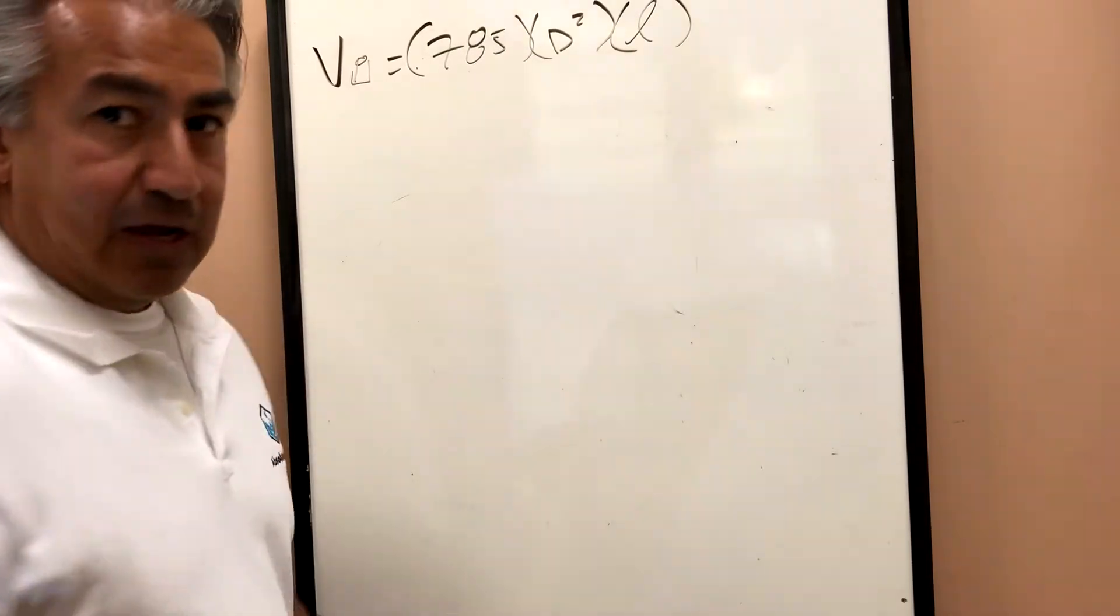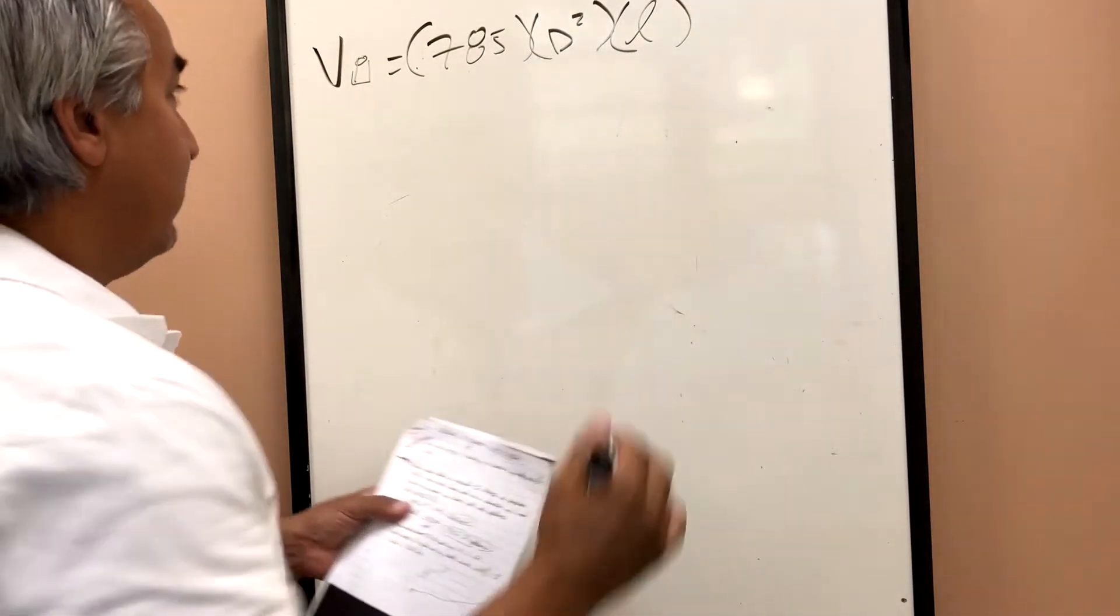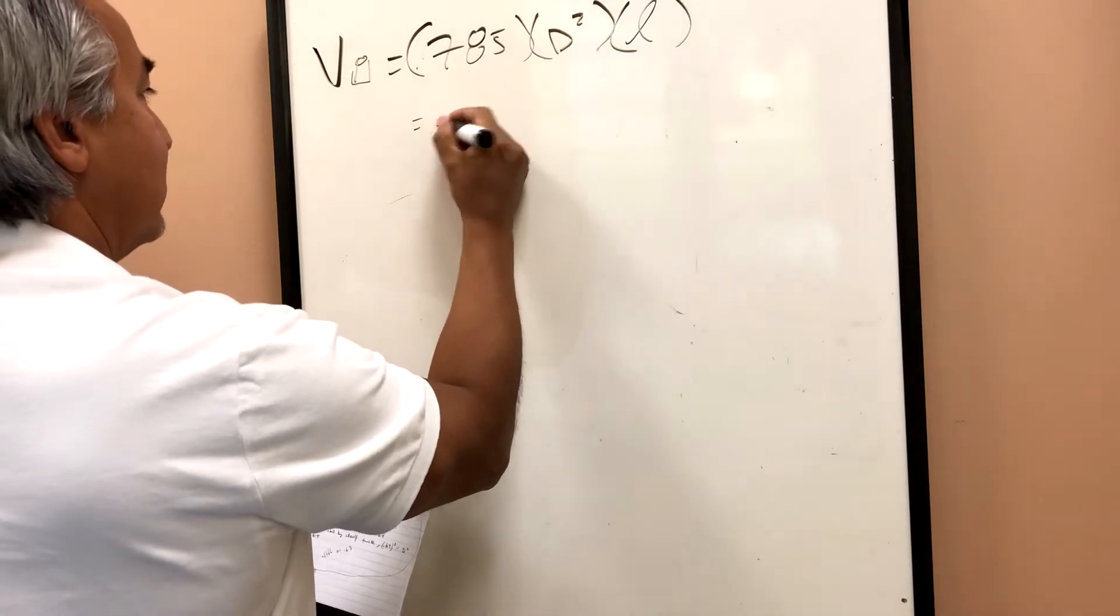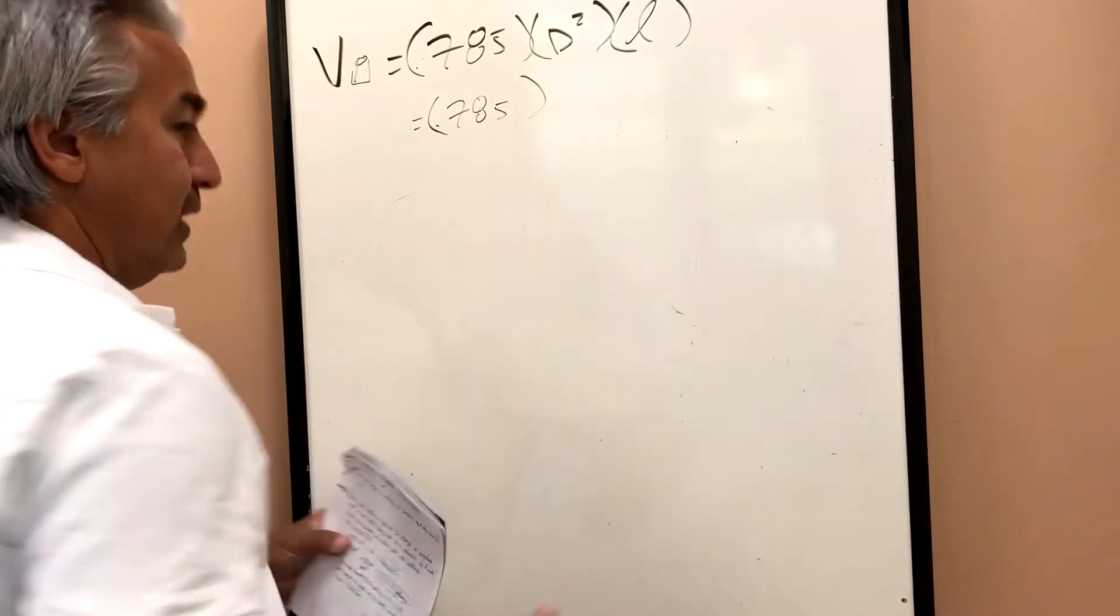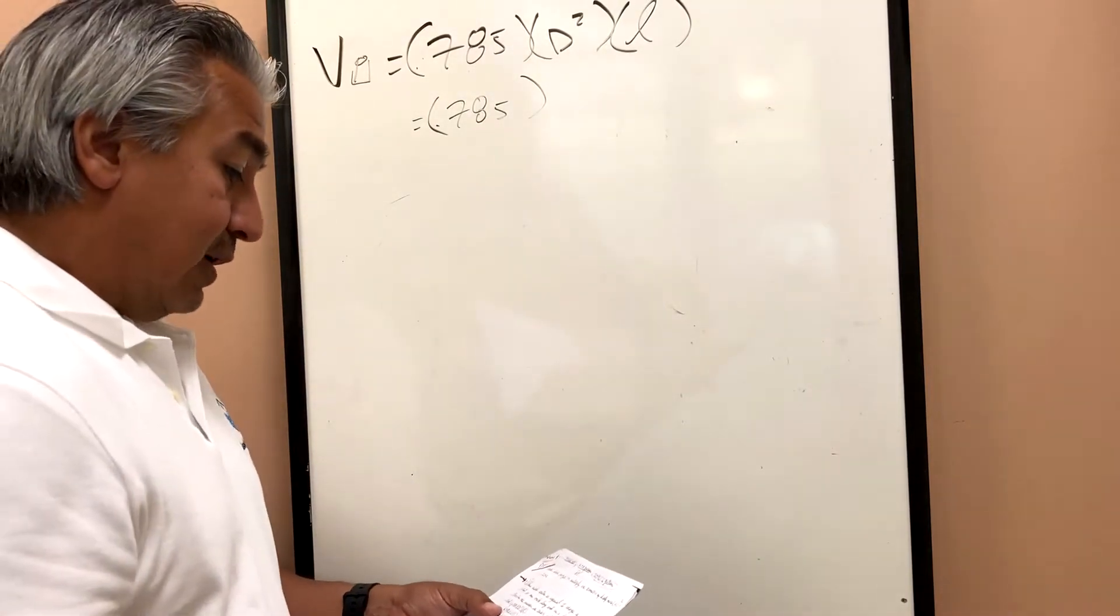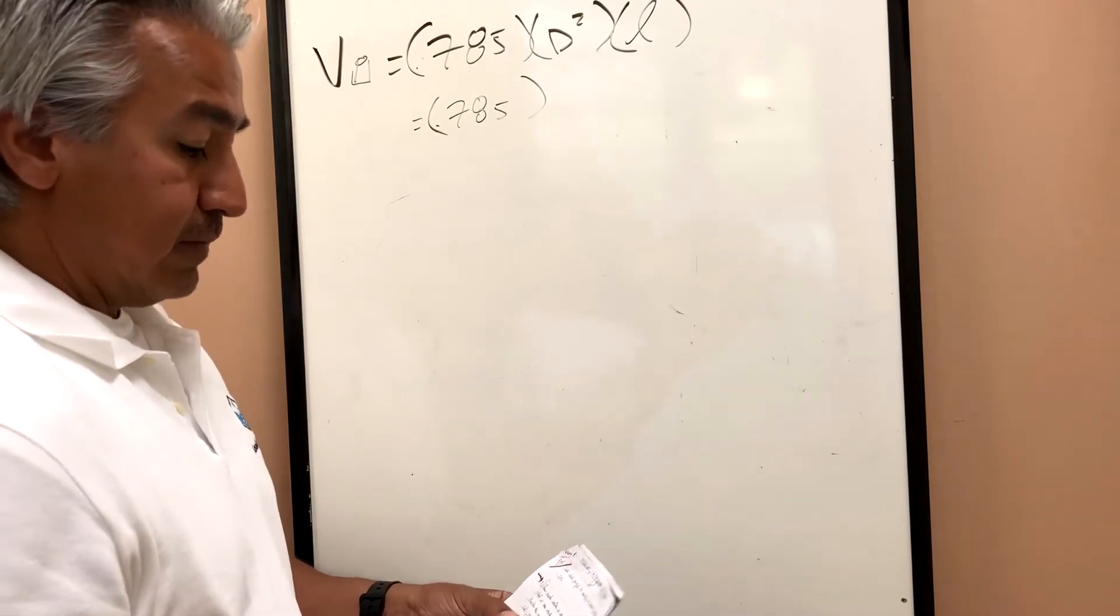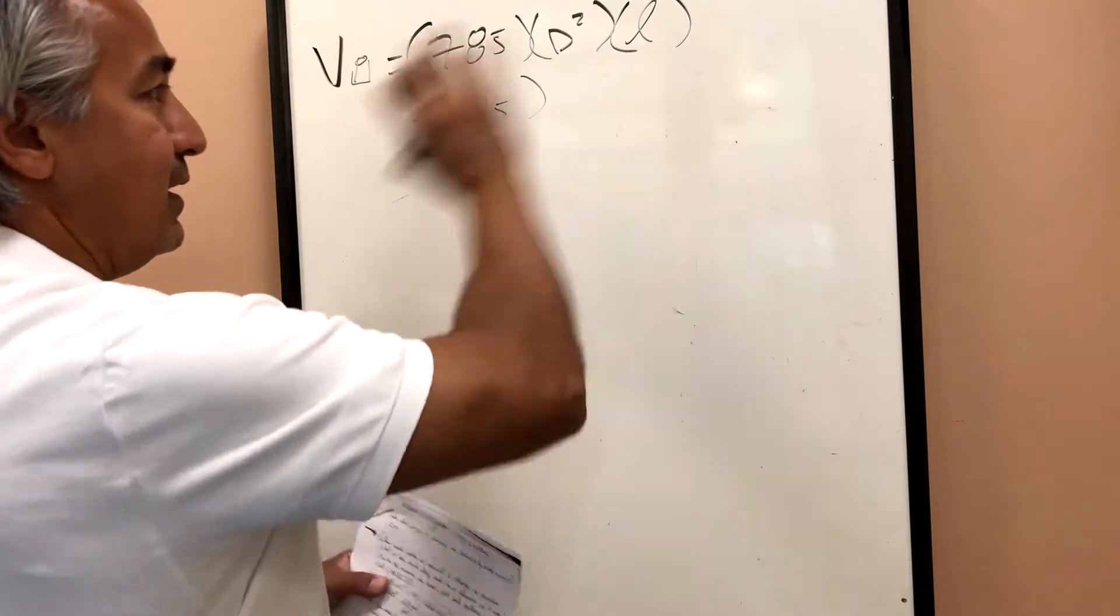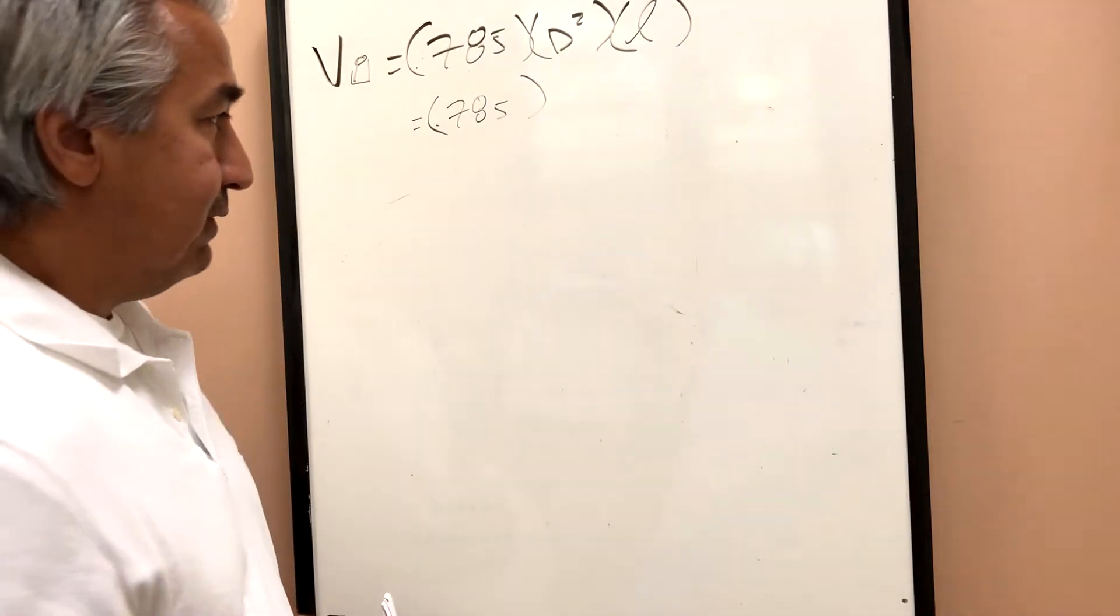All of the units of measure have to stay the same. So we can start by dropping down the 0.785 because it's already given to us. And let's take a look at what we're given in order to calculate the diameter. We're given that the diameter is eight inches. Well, we can't use those eight inches because everything here is going to be in feet. So we need to convert those eight inches into feet.